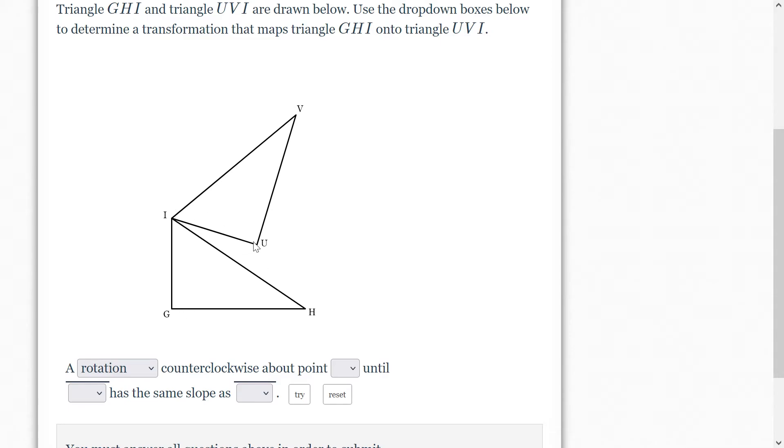So we're going to rotate until point - now we can't choose I because I is in the same spot for both, but I can choose either one of the other two letters. So I'll choose, let's do H this time.